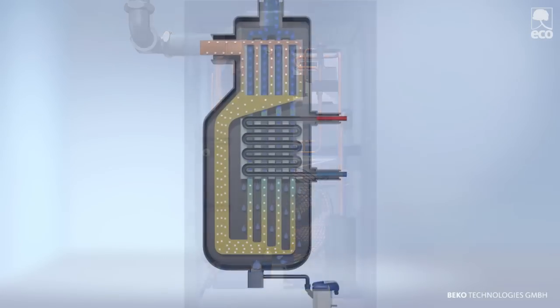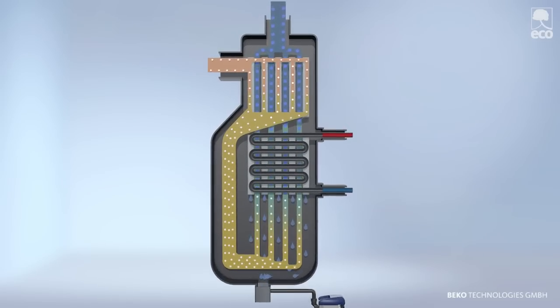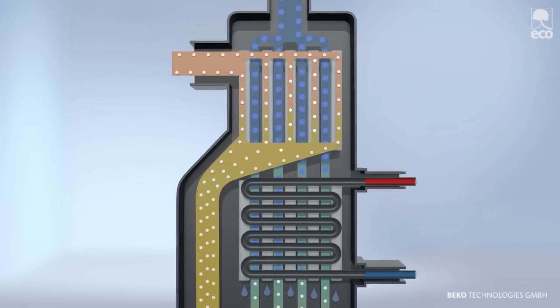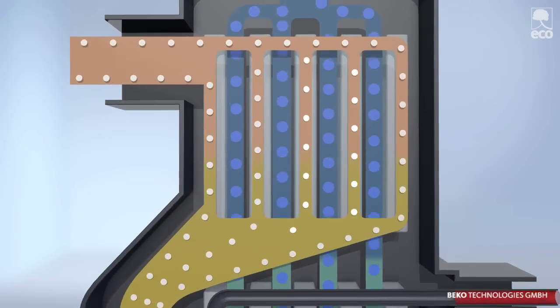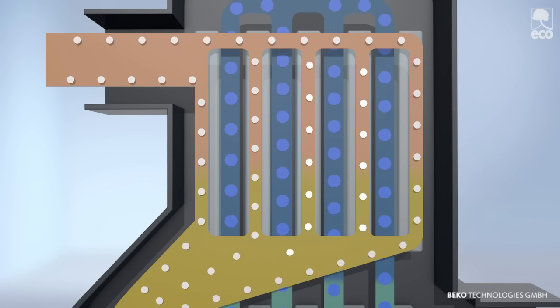Humid compressed air, shown in blue, enters the heat exchanger at the top at about 35 degrees Celsius. There it is pre-cooled in a counter current process by already dry and cooler air.